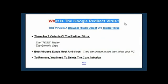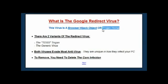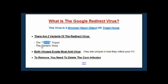So what is the Google redirect virus, or the redirect virus as it's commonly known? Well, this virus is a browser hijack object — BHO — or a Trojan horse. There are two variations: many people think there's just one redirect virus, but there are actually two — the TDSS Trojan horse, and the generic redirect virus itself. Both of these work in a very similar way, which is to basically change some settings or create a file on your PC that will change the way Windows handles redirects online.